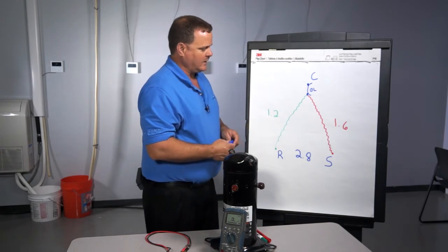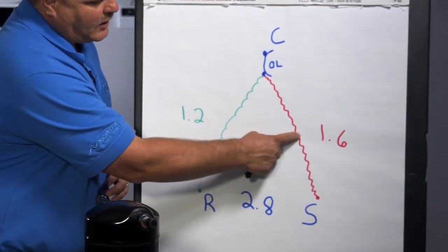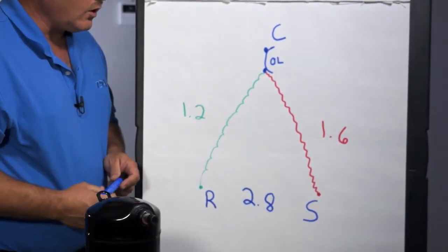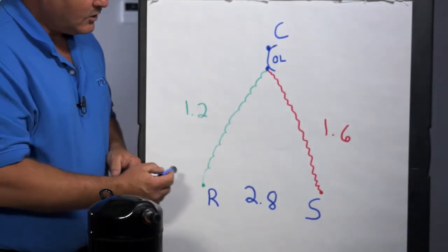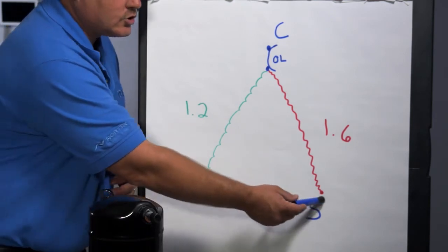If I had an open start winding, you'd have a winding break in the middle of the winding, so you would no longer get a reading from start to common, and you'd no longer get a reading from run to start.